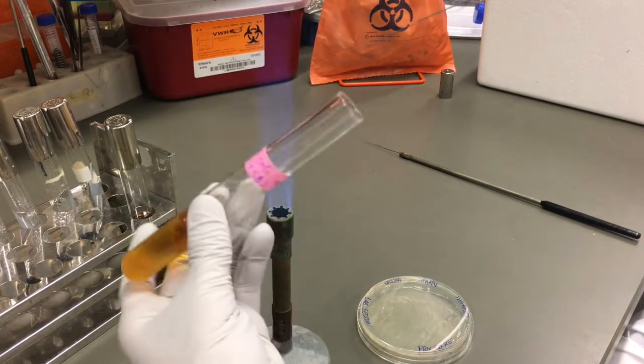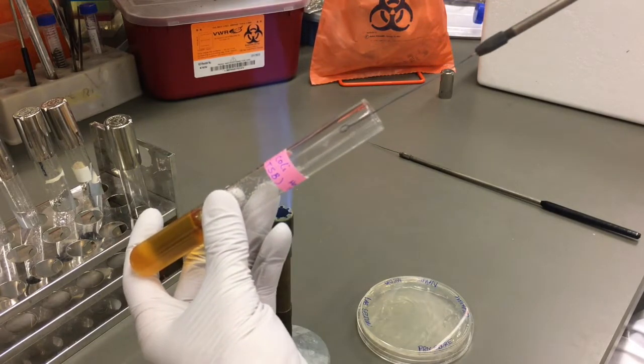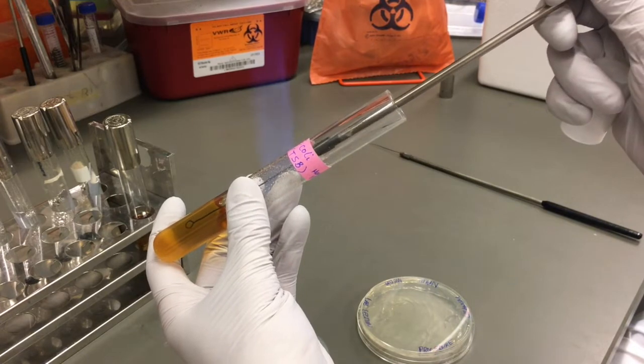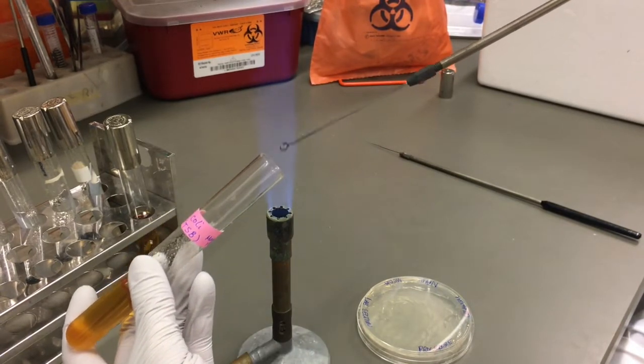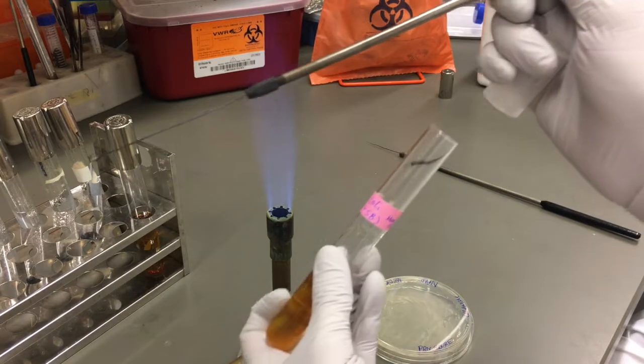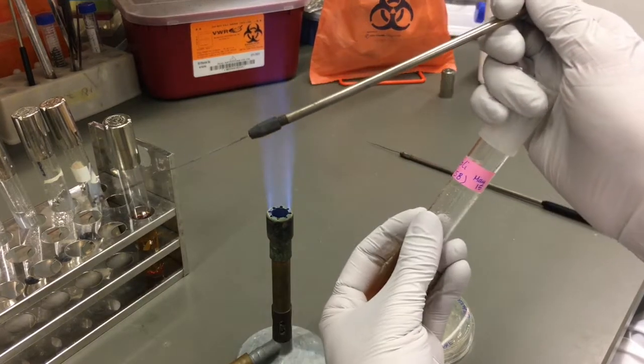Now, with our cool loop, we're going to go inside and take a small sample. Be careful not to touch the inside of the tube in case we lose that inoculation that's within that little loop.